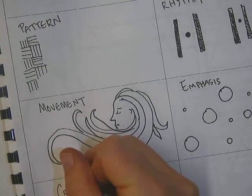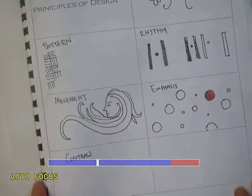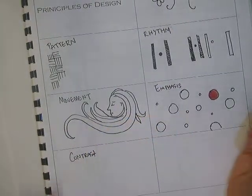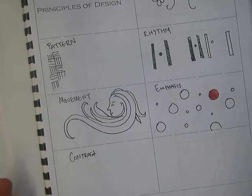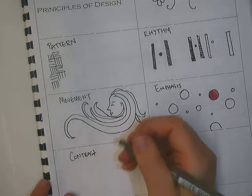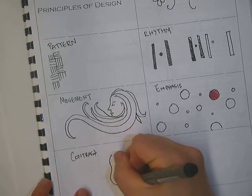Okay. Another one is, let's see. We already talked about balance. Contrast. Let me zoom out just a little bit. So contrast means differences. So differences of value, colors, et cetera. Like a yin yang symbol is a very perfect symbol that has high contrast. It's black and white.